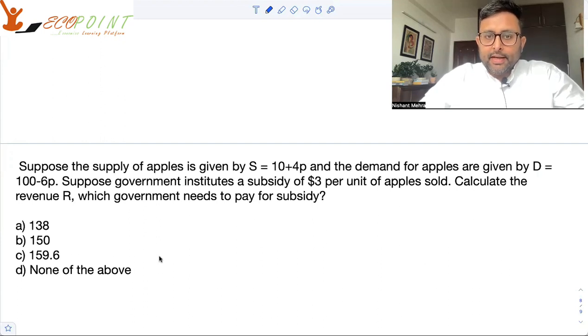Suppose the supply of apples is given by S equals 10 plus 4p, and the demand for apples is given by D equals 100 minus 6p. Suppose the government institutes a subsidy of $3 per unit of apples sold. Calculate the revenue which the government needs to pay for the subsidy.